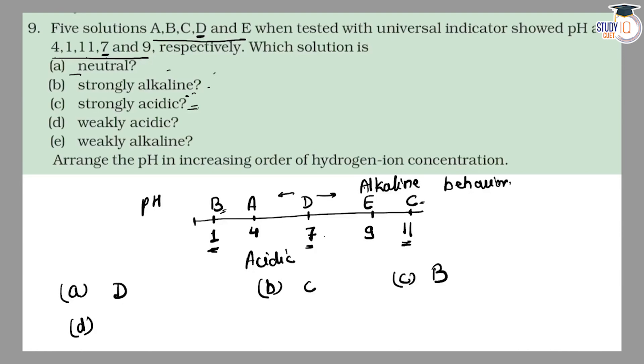Part D, weakly acidic. Weakly acidic means it will be less than 7, but not very small value. This will be 4. So this will be solution A.